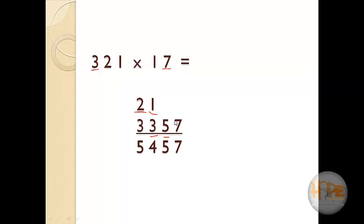And 1 into 7 is equal to 7. So the answer is: 3 plus 2 is equal to 5, 3 plus 1 is equal to 4, 5 and 7. So the answer is 5457.